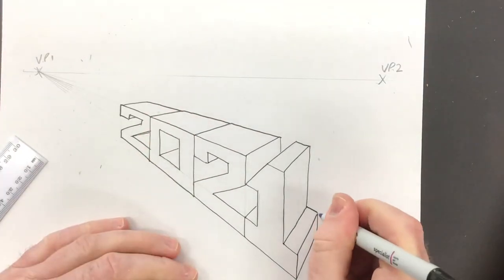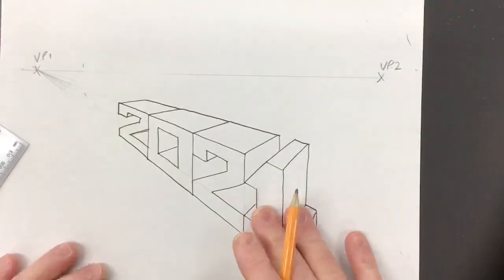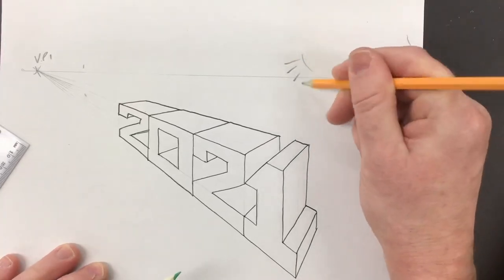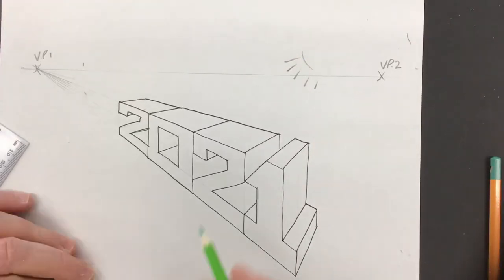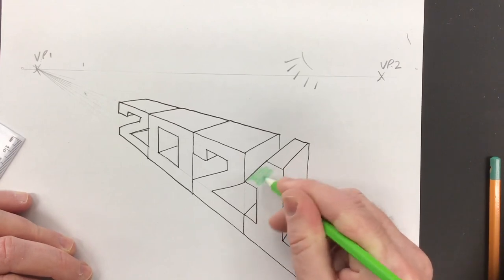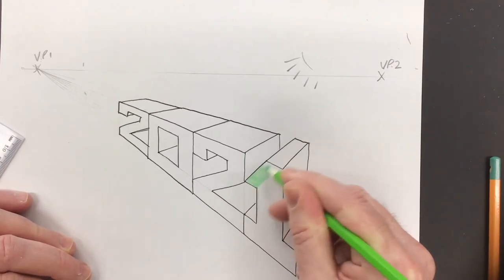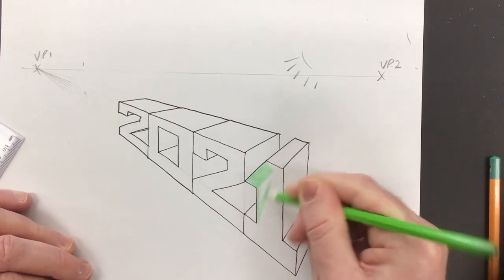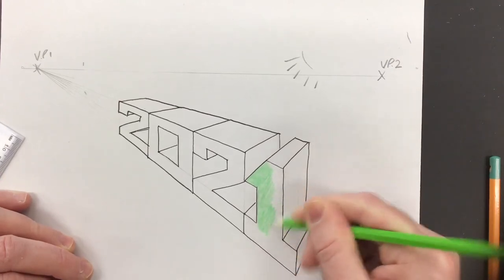I'm putting my light source to the top right hand corner and using coloring crayons to add the three tones: light, medium, and dark. The dark on the front face, light on the top, and then medium on the inside.